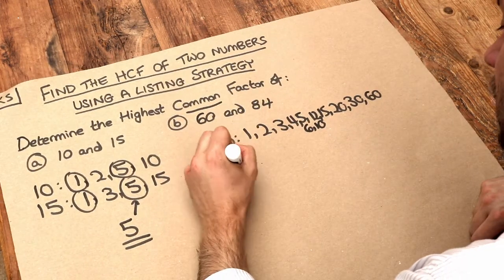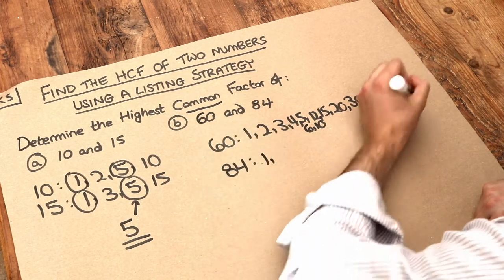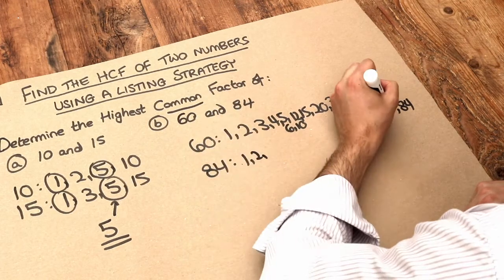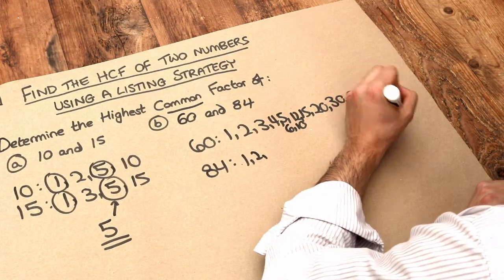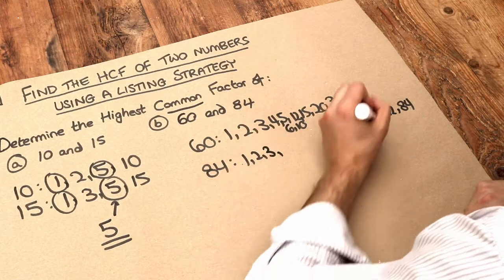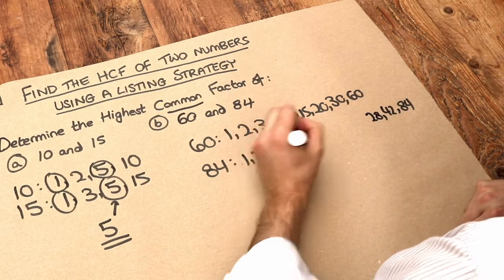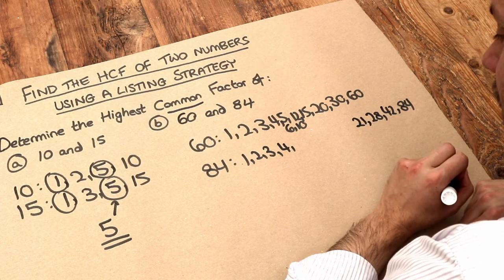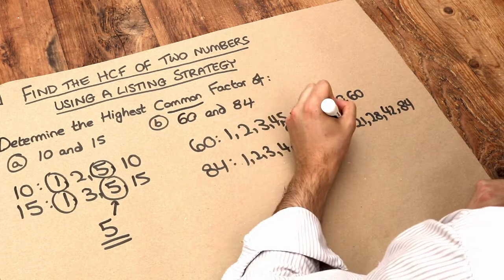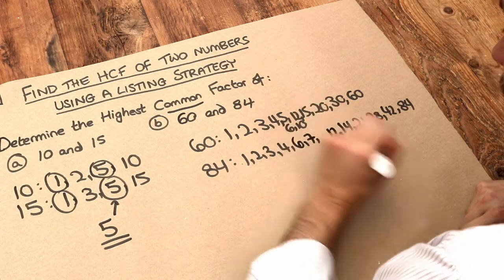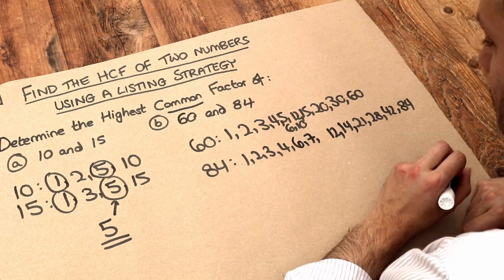Well, 1 and 84 multiply to give 84. 2 and 42 multiply to give 84. 3 and 28 multiply to give 84. 4 and 21 multiply to give 84. 6 times 14 gives you 84. And 7 times 12 give you 84. And I believe that is it.